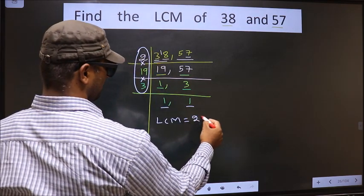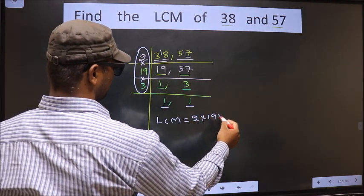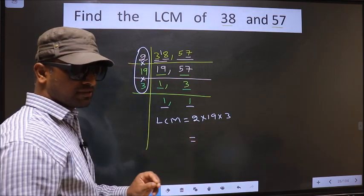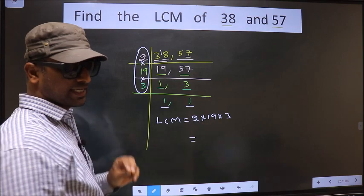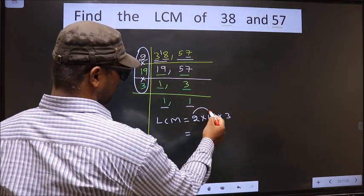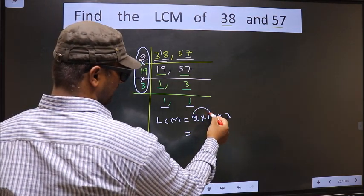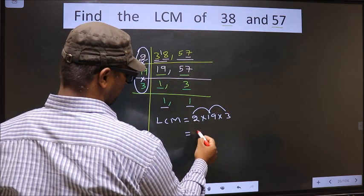That is 2 into 19 into 3. Now, let us multiply these numbers. That is 2 into 19, 38 into 3. 1, 1, 4.